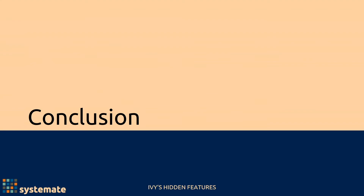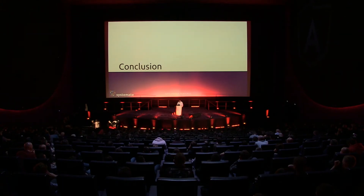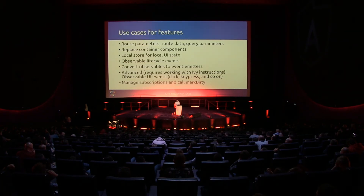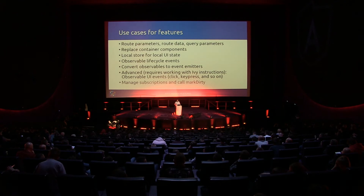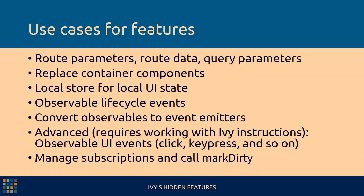I'm jumping to conclusions quickly because I was afraid of running out of time — I had more interesting use cases, but I'll move on. There's a lot in the conclusion as well. When I publish the presentation you can look into the more advanced use cases. Here's a list of use cases for features: you can use them to access route parameters, route data, and query parameters without injecting the router or the activated route, which is different for each component. You can't really wrap that in a nice service because you have to pass the activated route, which is specific to each component — but we can do that with features, and it's very nice. They use the exact same injector as the components.